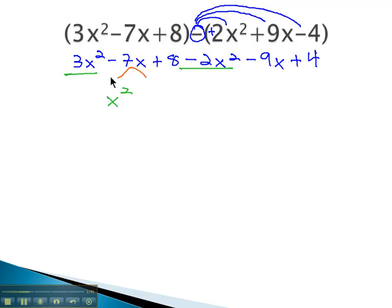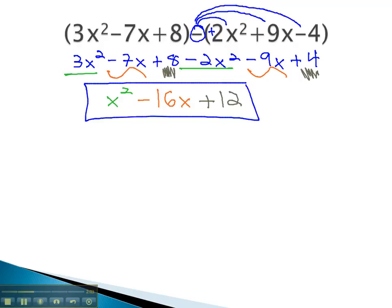Then there's negative 7x, which can combine with the negative 9x, giving us negative 16x. And finally, the positive 8 and positive 4 gives us positive 12 for our final solution when subtracting the two polynomials.